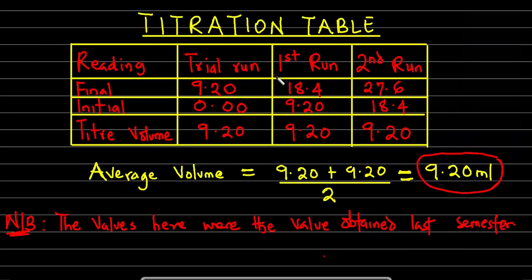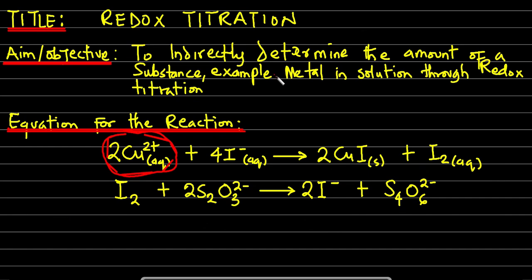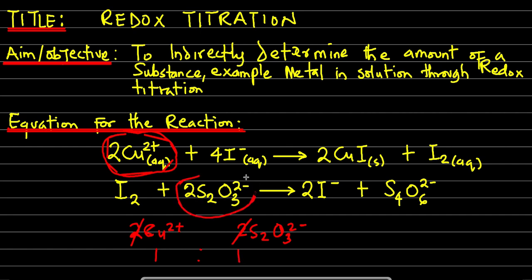How do we get 1:1? From the reaction equation, copper has a coefficient of 2 and thiosulfate also has a coefficient of 2. So 2 moles of copper to 2 moles of thiosulfate — these cancel to give 1:1. That's how we got the mole ratio of 1:1.